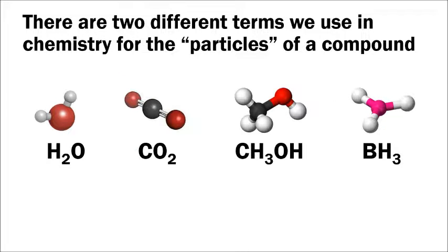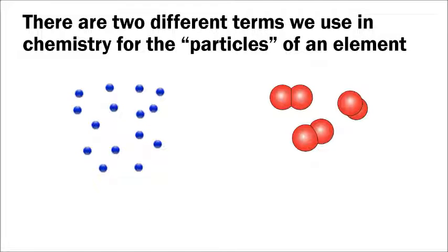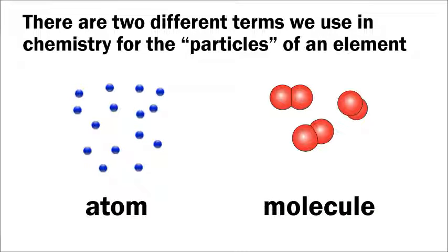There are two different terms used in chemistry for particles of a compound. For covalent compounds, we use the word molecule. For ionic compounds, we cannot use the word molecule, so we use the term formula unit, which refers to one section of the large crystal lattice. For elements, we can refer to an atom as a single particle of an element, but some elements exist in bonded groups and can still be referred to as a molecule.